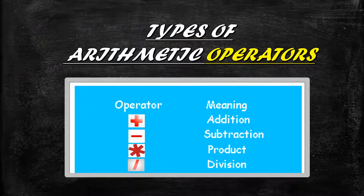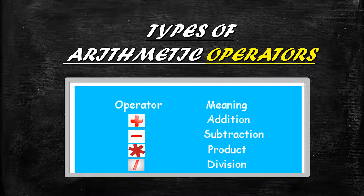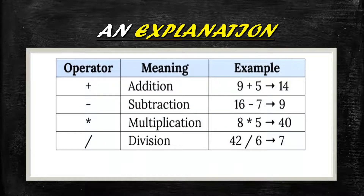There are four types of arithmetic operators: addition, subtraction, multiplication, and division. The symbols used are the plus sign for addition, the minus sign for subtraction, the asterisk for multiplication, and the slash for division.